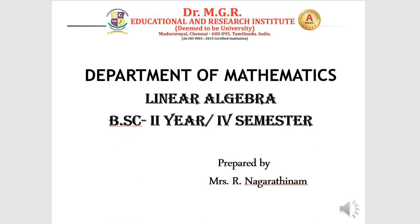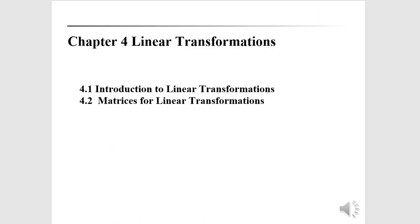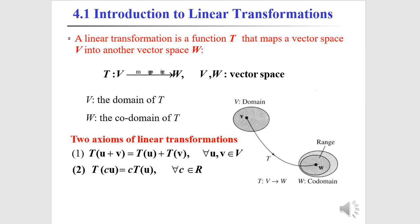Now we are going to see the fourth unit of linear algebra: linear transformations. Introduction to linear transformations — a linear transformation is a function T that maps a vector space V into another vector space W. We have the mapping T: V → W, where V is the domain of T and W is the codomain of T.